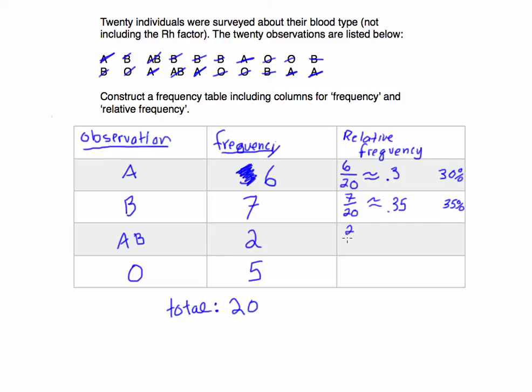So as a decimal that's point three five, or thirty-five percent. If I look at AB, that appeared two times out of twenty. If we convert that to a decimal, that would be point one, which is equivalent to ten percent.